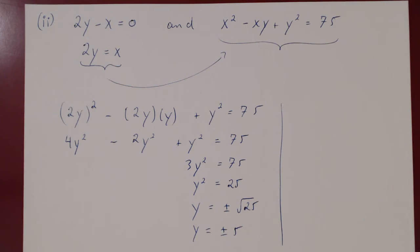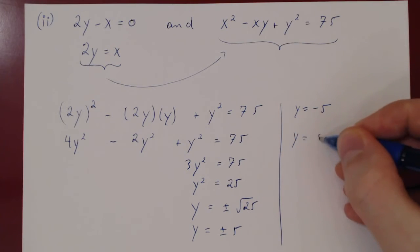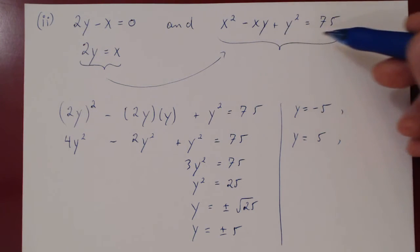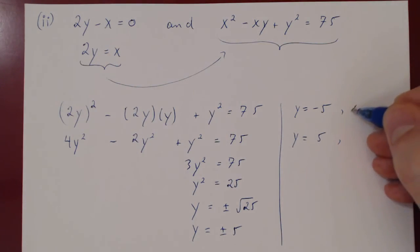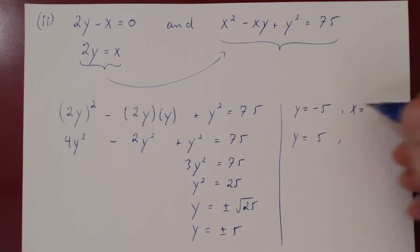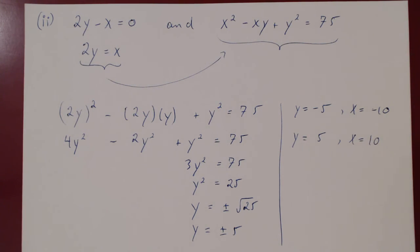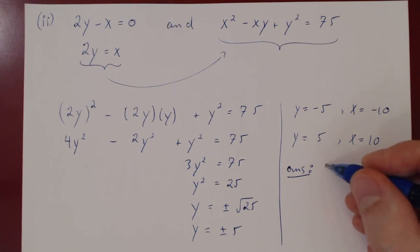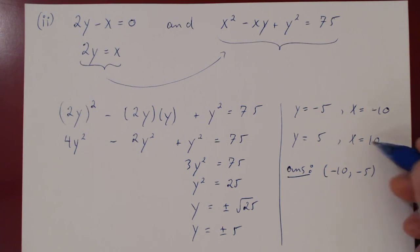We find the corresponding x values using x equals 2y. If y equals negative 5, then x equals negative 10; if y equals positive 5, then x equals positive 10. Therefore, there are only two points on this curve where the tangent line is vertical: (negative 10, negative 5) and (positive 10, positive 5).